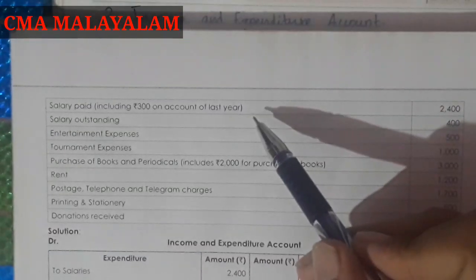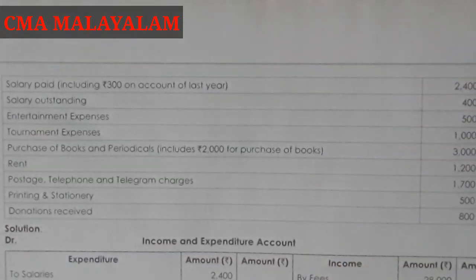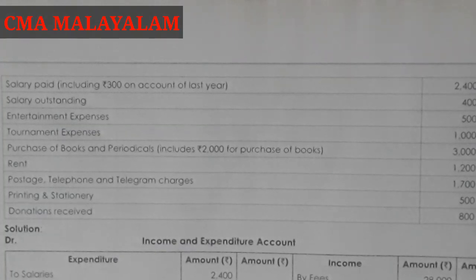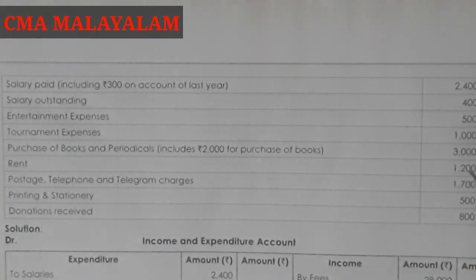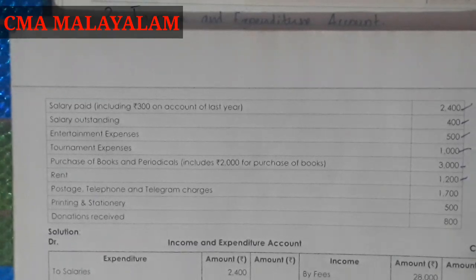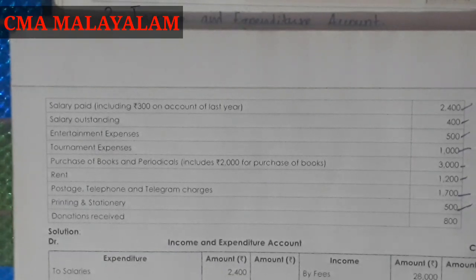Salary paid, including 300 on account of last year — that is outstanding. Salary outstanding is an expense item. Entertainment expense and tournament expense are also expense items. Purchase of books and periodicals, including 2,000 for purchase of books. So we can take these figures: amounts of 20, 20, 50.